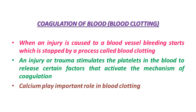The clot or coagulation forms mainly as a network of threads, and this network is due to fibrin, in which damaged blood elements are trapped. These elements of blood are trapped within this fibrin. Fibrins are formed by the conversion of inactive fibrinogen in the plasma by the enzyme known as thrombin.